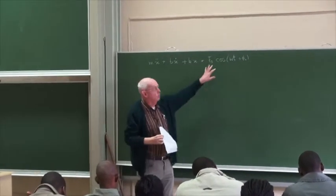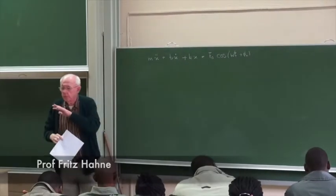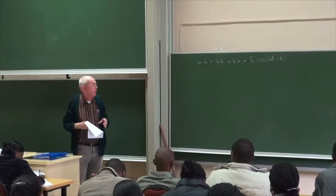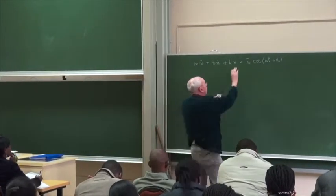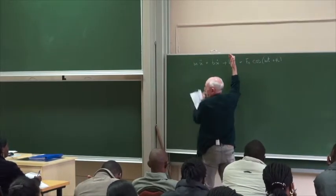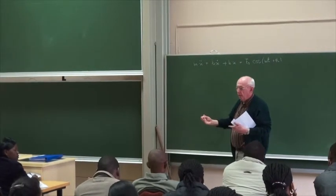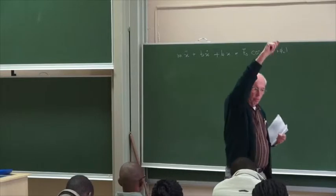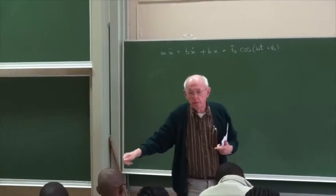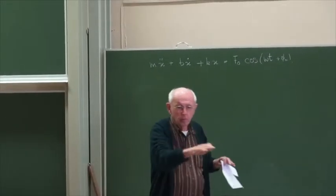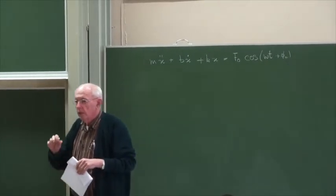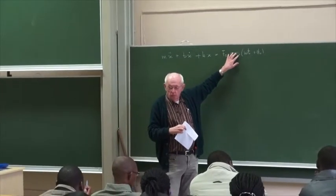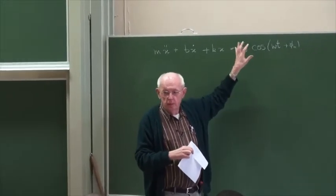This is the forcing term: F zero times cosine omega t. The way we already discussed, we solve this equation by first making it equal to zero. That is the damped harmonic oscillator, and what we know is that wherever we start, it will eventually stop — the solution gets less and less over time.